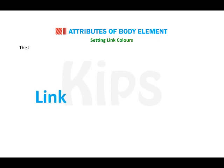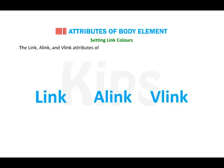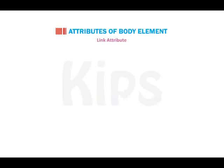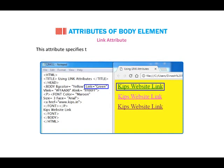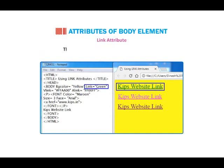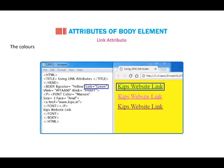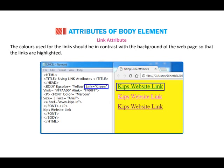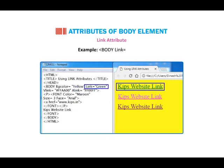Setting Link Colors. The link, A-Link, and V-Link attributes of the body tag control the colors of the hyperlinks displayed on the web page. The link attribute specifies the color of the unvisited links in the web page. The default color set by this attribute is blue. The colors used for links should be in contrast with the background of the web page so that the links are highlighted. Example: body link="green".